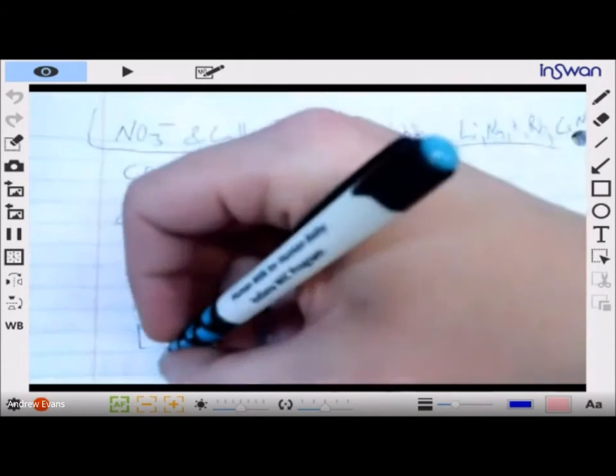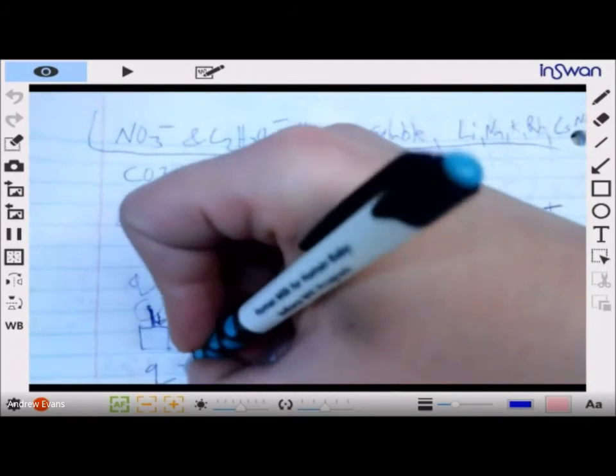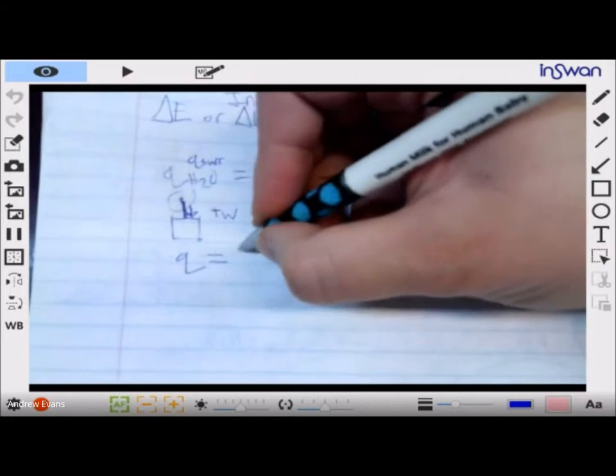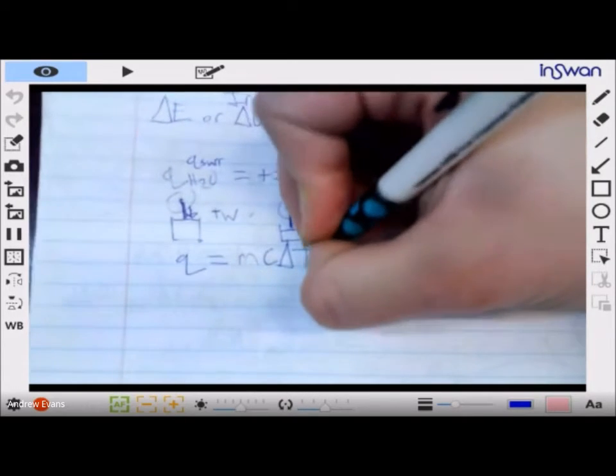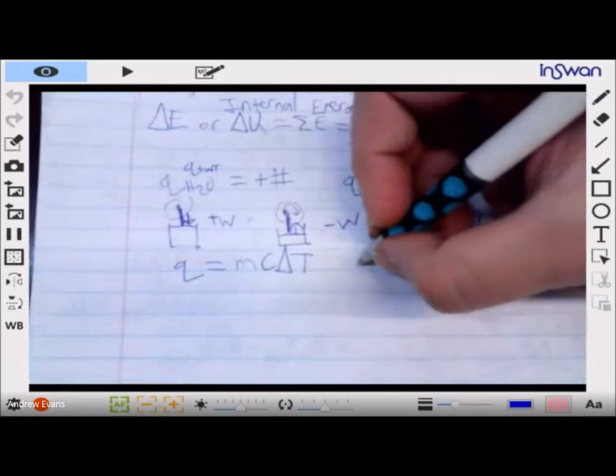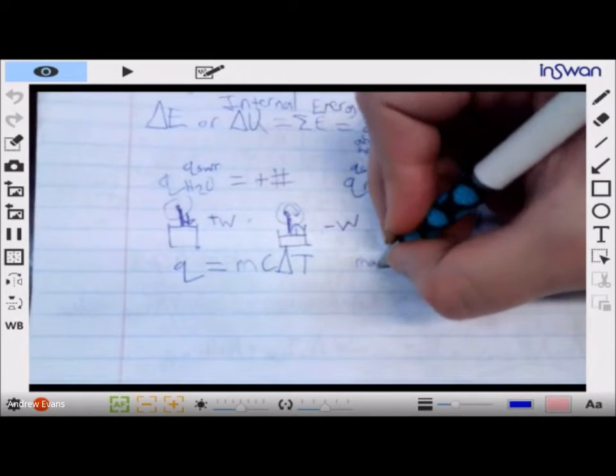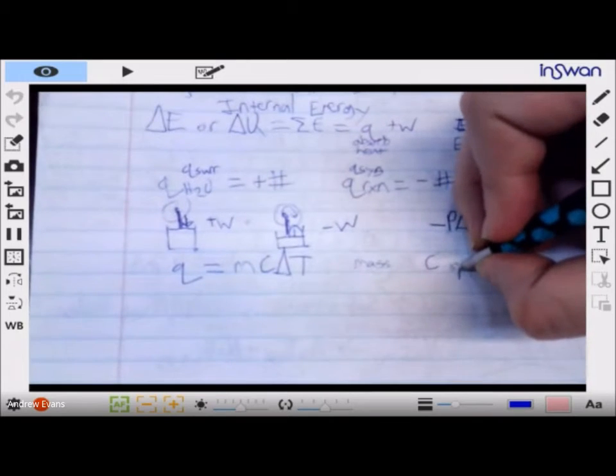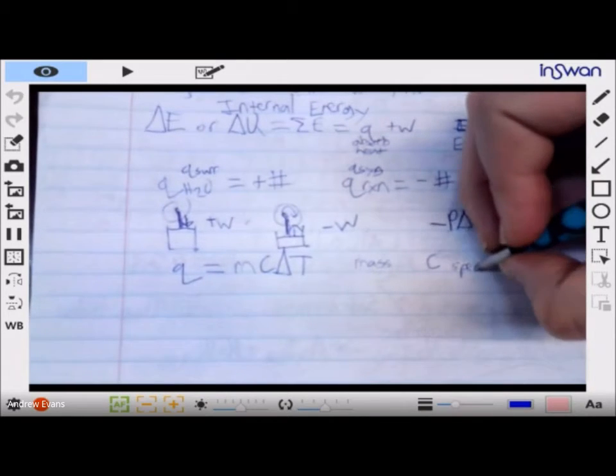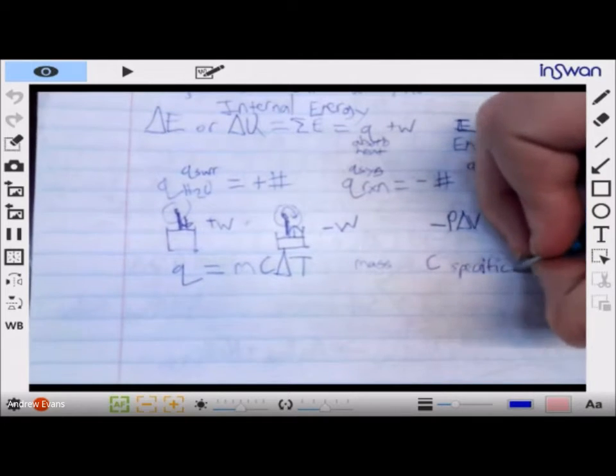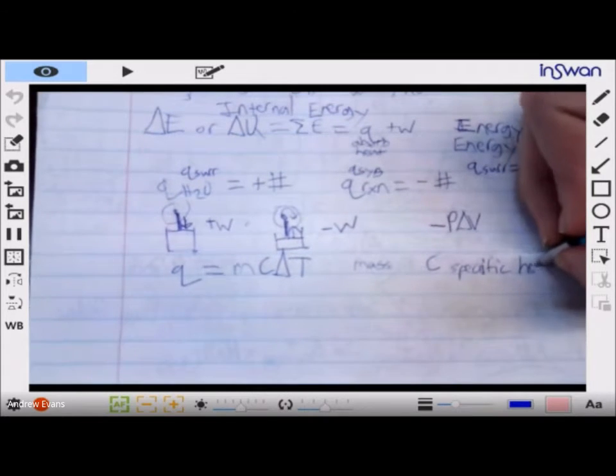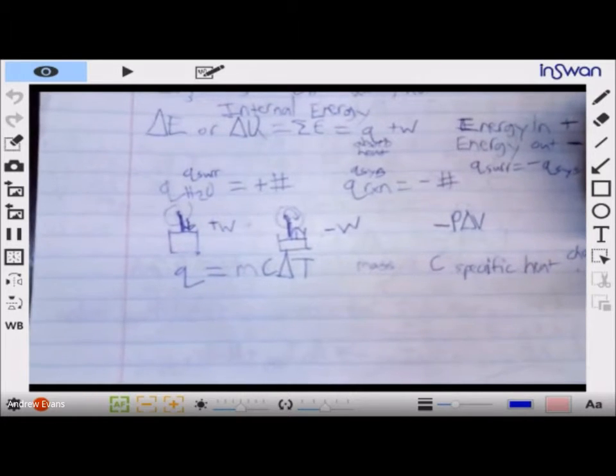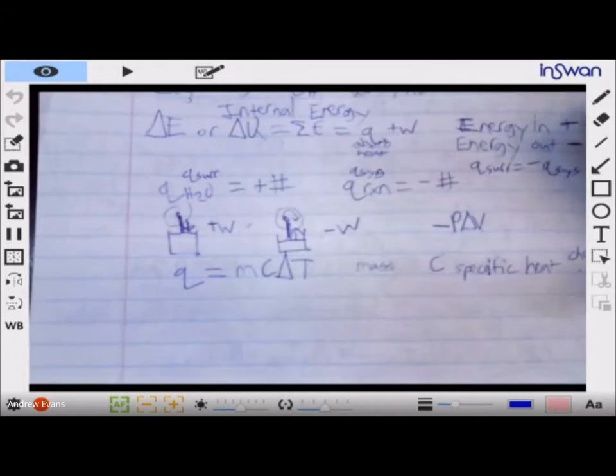Now the other big thing we can deal with is how do we deal with heat mathematically. Heat is going to be our simple equation called q equals m c delta t. M is our mass that we're heating, c is our specific heat, and delta t is our change in temperature.